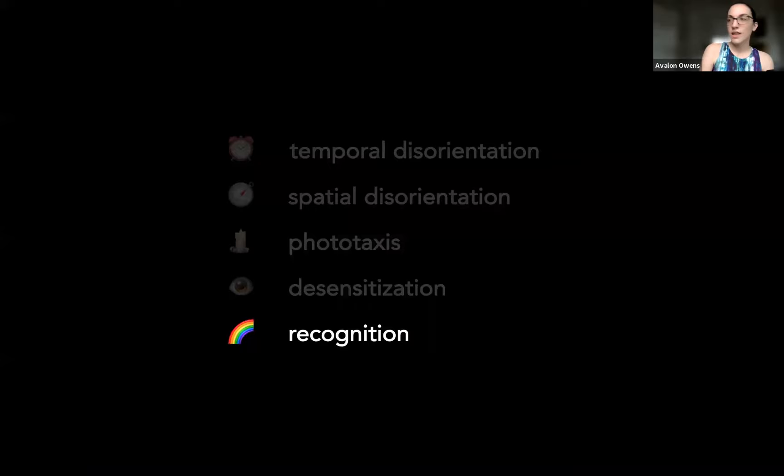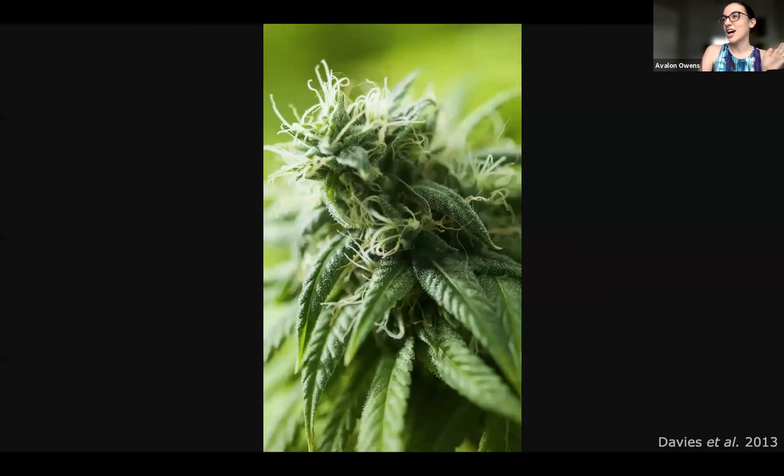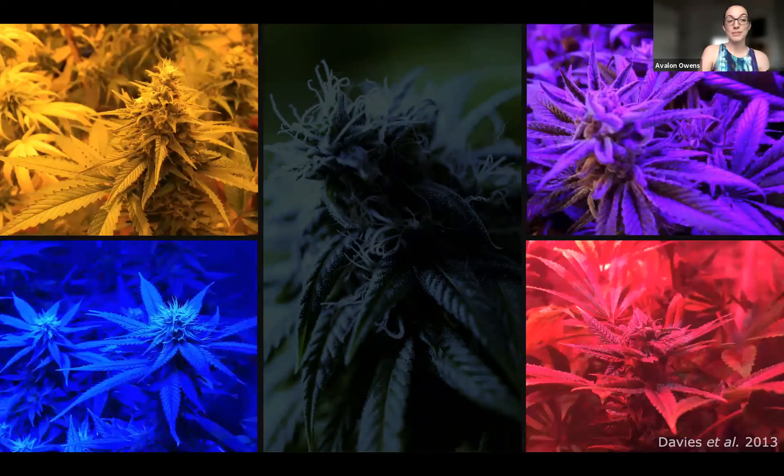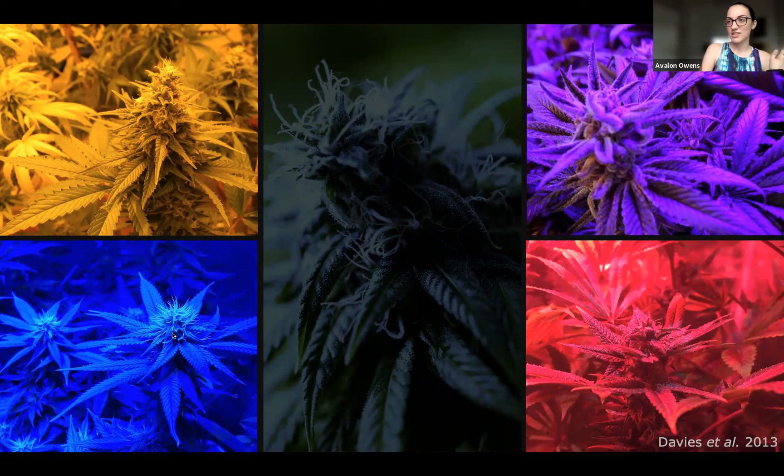Final category is going to require a little bit of explanation. I call this recognition. Let's go on an imagination journey together. Imagine that you are an herbivorous insect and you come out at night and you're interested in finding a particular species of plant. At night the plant might look something like this, kind of bluish dark, hard to see, but under light of an unusual color, it could be completely unrecognizable. Most artificial lights aren't as intensely blue or red as this, but even small differences like between a cool white or a warm white LED could make it difficult for insects to recognize host plants, prey, predators, or conspecifics.